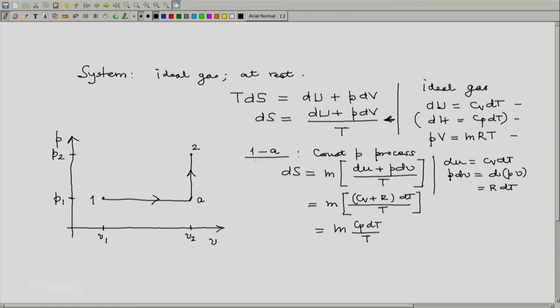So this is for the process 1A and hence, we are going to have after integrating this, SA minus S1 will be M into integral from 1 to A along this constant pressure line of Cp dT by T. Let us say this is our first expression.